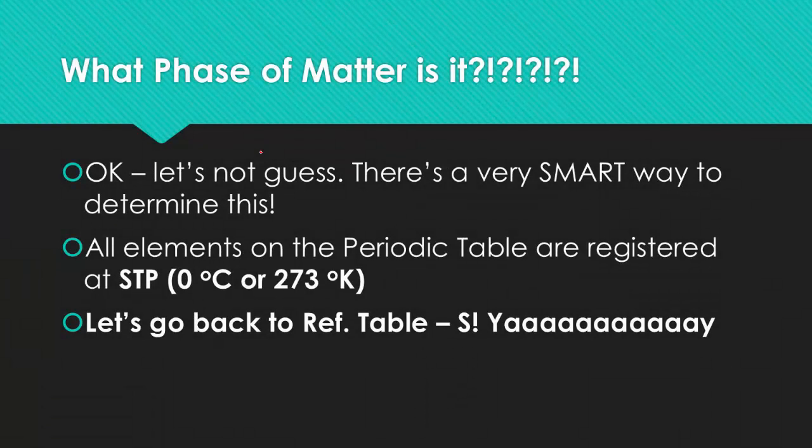Before we have to guess about what phase of matter an element is at STP, why don't we figure out what is standard temperature? All of the elements in the periodic table are registered at 0 degrees Celsius or 273 degrees Kelvin. With that information at hand, let's go back to reference table S. That's the big gigantic chart right after the periodic table.